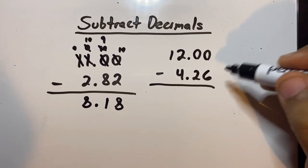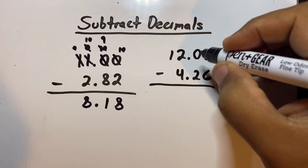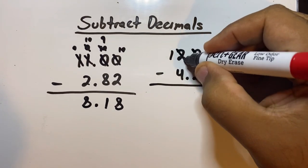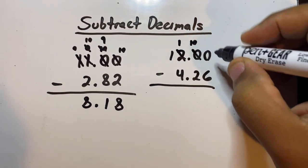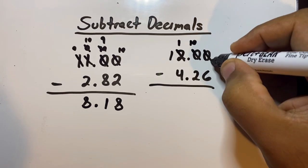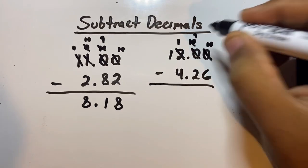Now, just like the rule before, you can't subtract numbers on top that are smaller than the numbers on the bottom, so you have to borrow. We'll start with this 0. This 0 will borrow from the 2, so this 2 becomes a 1 and this 0 becomes a 10. Then this 0 right here will become a 10 because it borrowed from this 10, and this 10 becomes a 9.